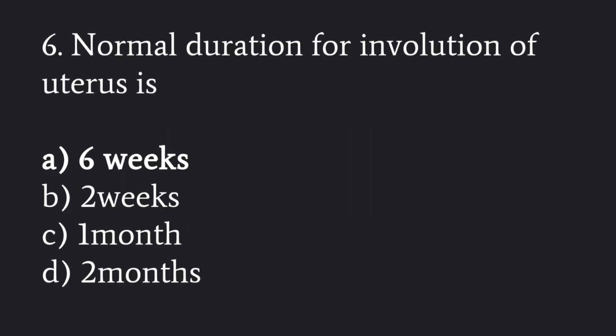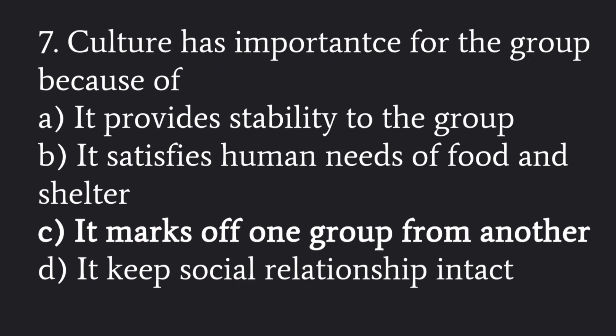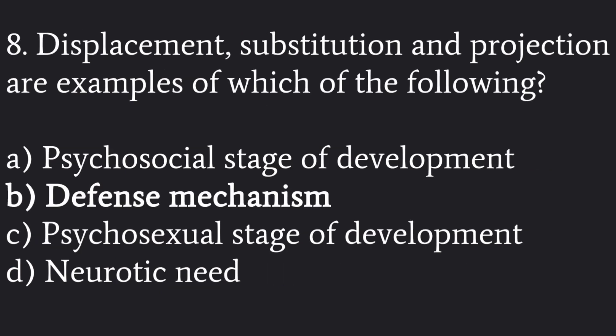Normal duration of uterine involution is six weeks post delivery. Culture has importance for the group because it marks off one group from another. Displacement, substitution, and projection are examples of defense mechanisms.